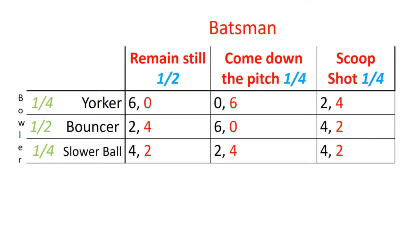For the batsman to be indifferent between his actions, the bowler must bowl a Yorker with probability one quarter, a bouncer with probability one half, and a slower ball with probability one quarter. For the bowler to be indifferent, the batsman must choose to remain still half the time, come down the pitch a quarter of the time, and play the scoop shot a quarter of the time.